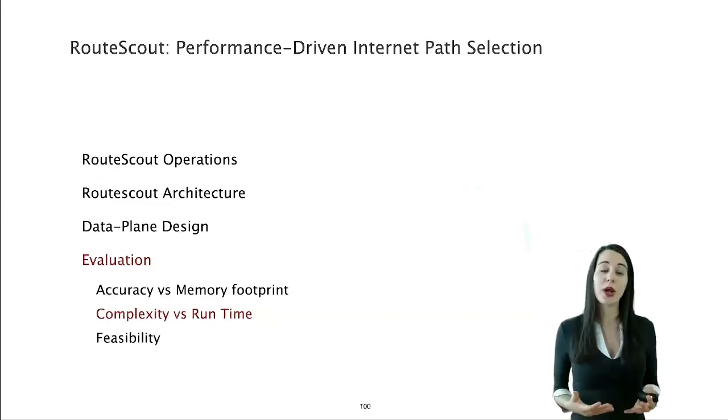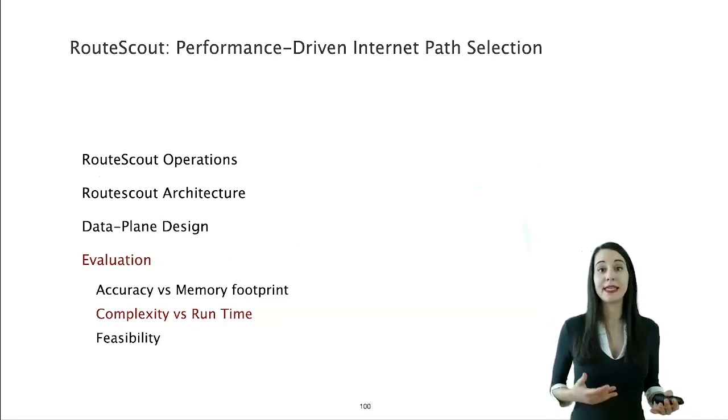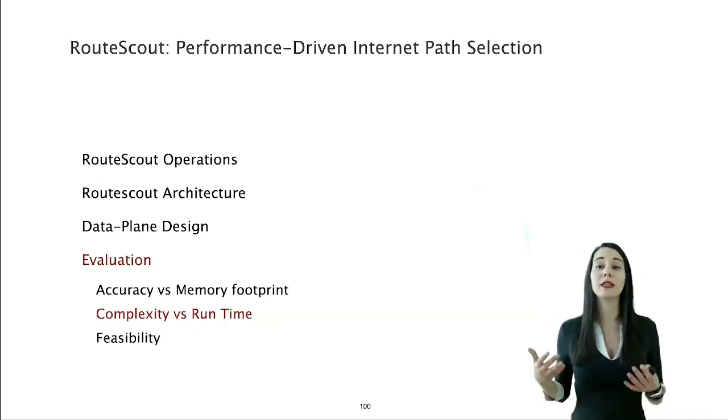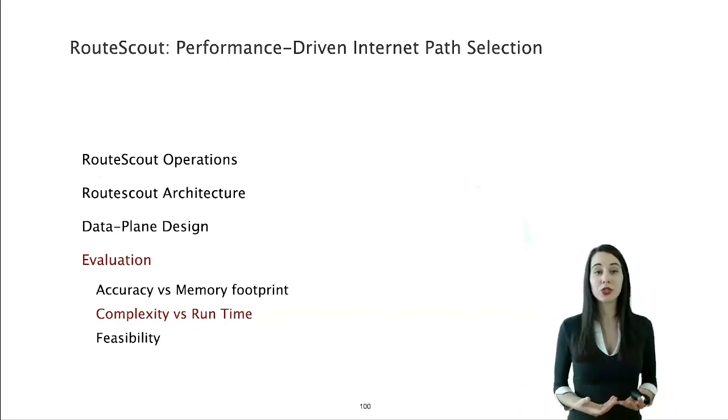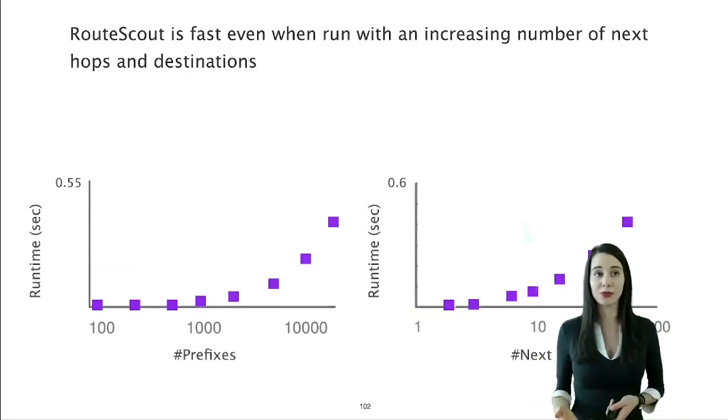To gauge the trade-off between complexity and runtime for the control plane components, and in particular for the solver, we implemented the solver in Gurobi, and we run it with variant number of prefixes and next hops. As one would expect, the solver's runtime increases as the problem becomes more complex, but it always takes less than one second.